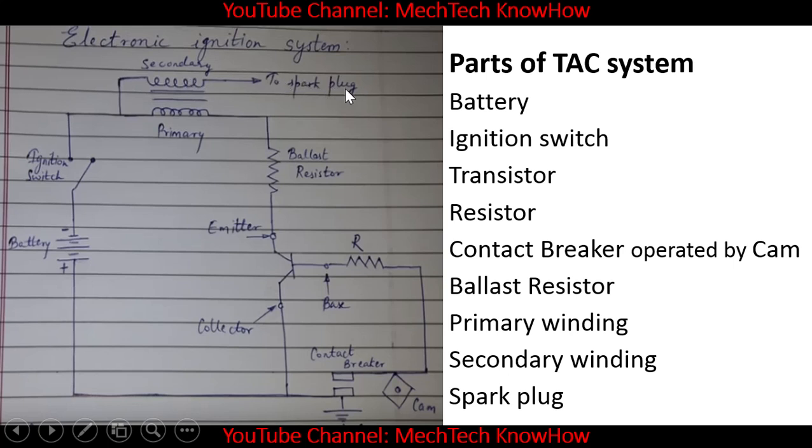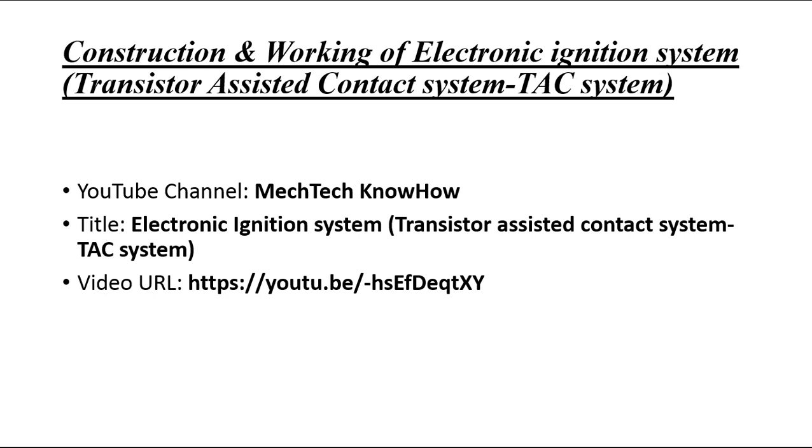So these are the parts of electronic ignition system. For construction and the working of electronic ignition system, the type which we have discussed is transistor assisted contact system TAC system. For that the construction and working, you can refer to my YouTube channel MechTech KnowHow. The title is Electronic Ignition System Transistor Assisted Contact System TAC System. The video URL is given over here and will also be given in the comment section.